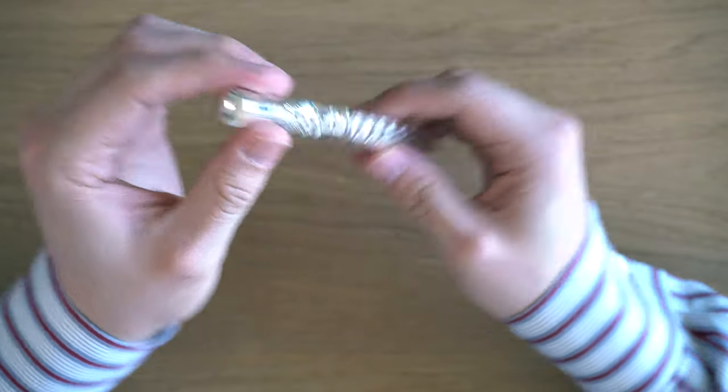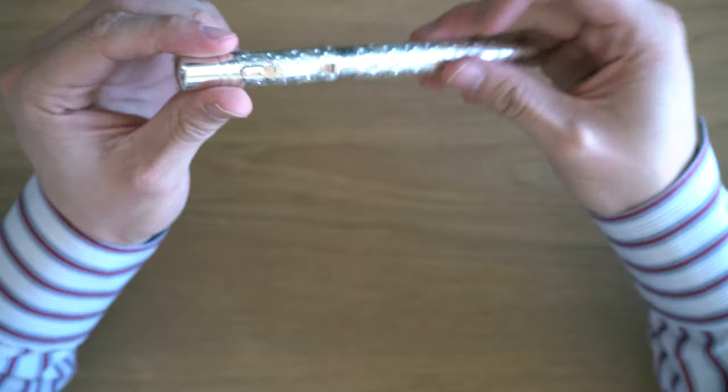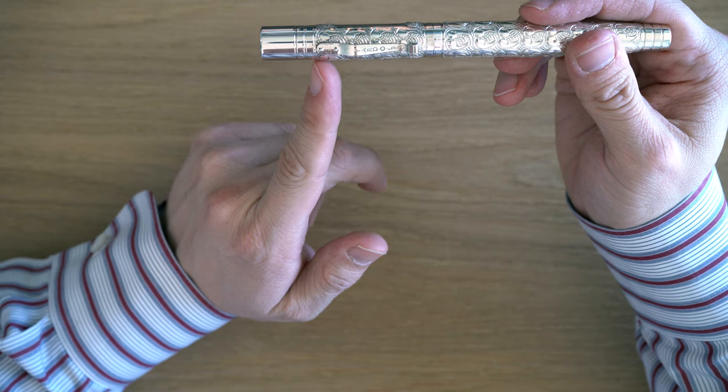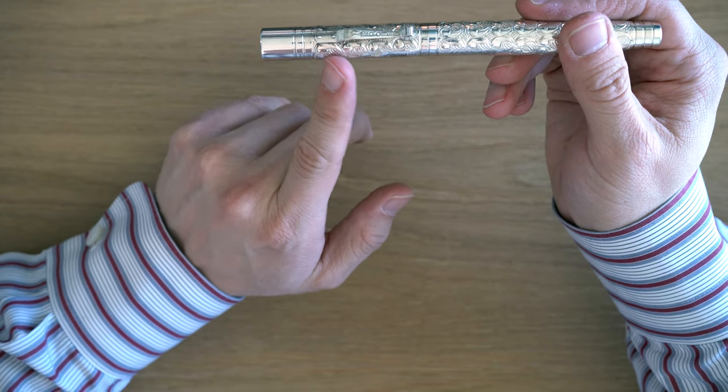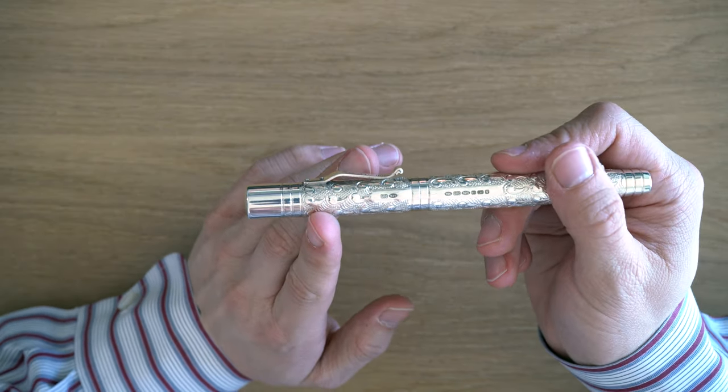There's nothing on the finial or the end of the barrel. They're just smooth. But we start, we have a ring here, a ring here, and then we get into the area that is, I'm calling it stamped, but it is a type of engraving.